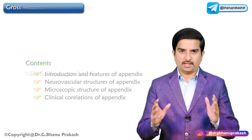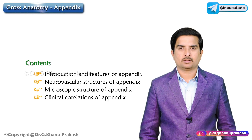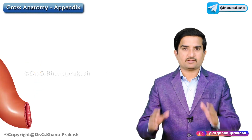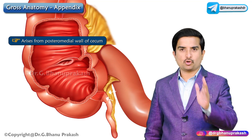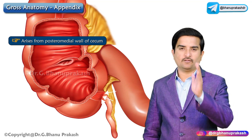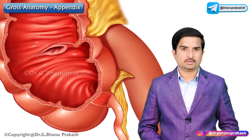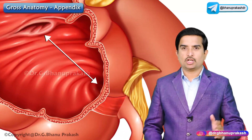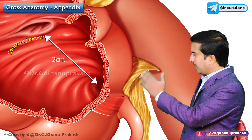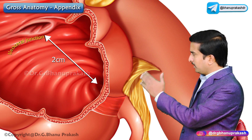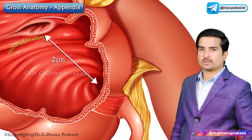Anatomy of the appendix. The appendix arises from the posteromedial wall of the cecum, approximately two centimeters below the ileocecal junction.